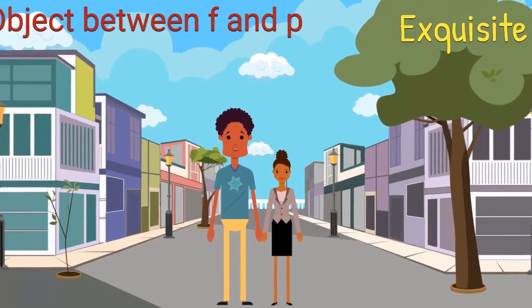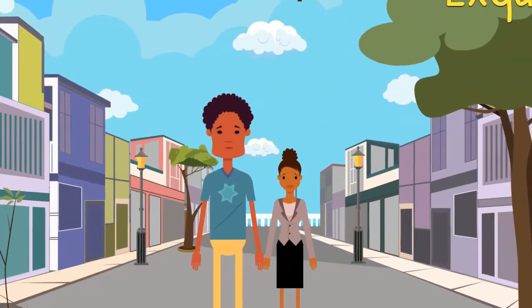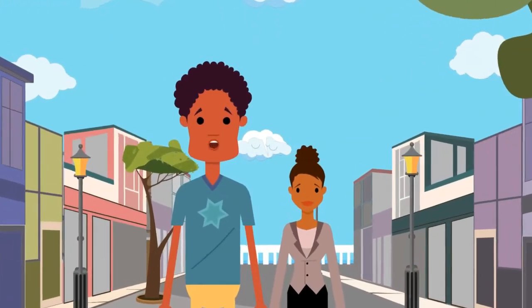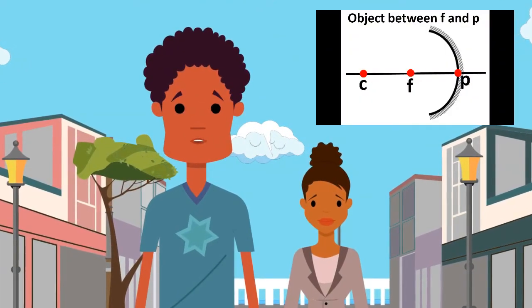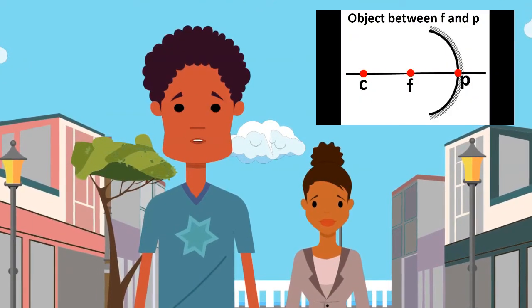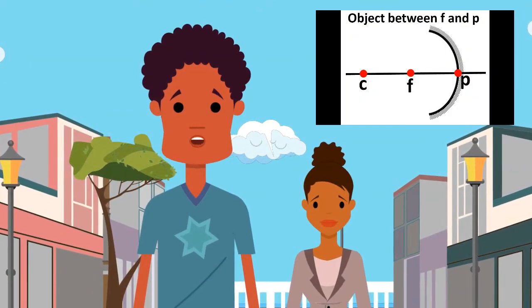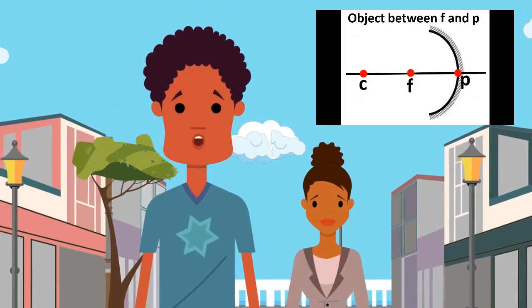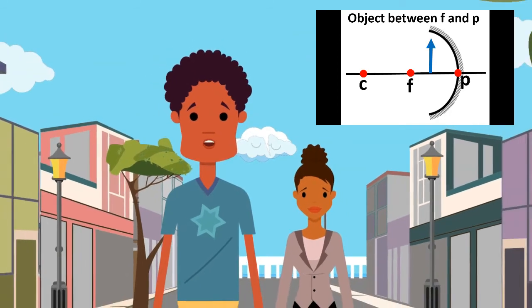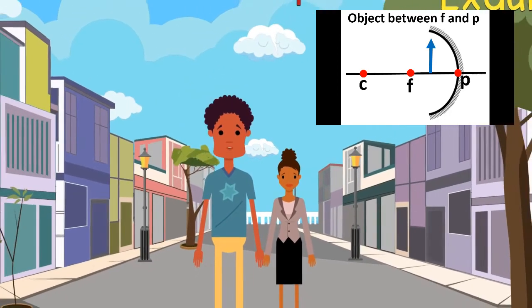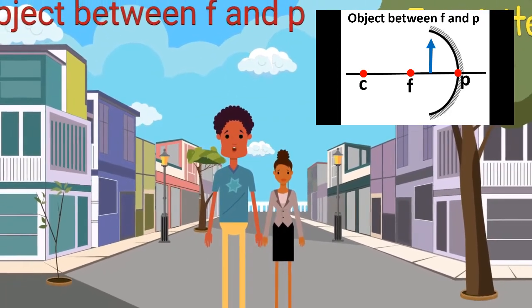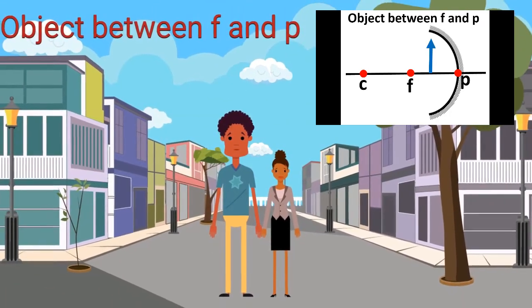Welcome to Exquisite! In this class, we will be learning about the last type of image formed by a concave mirror — that is, when the object is placed between the principal focus and the mirror.